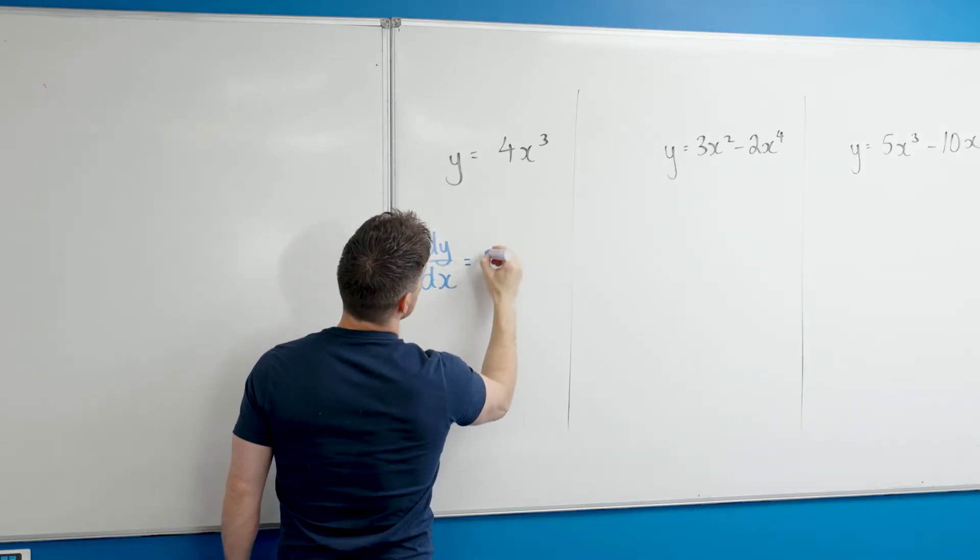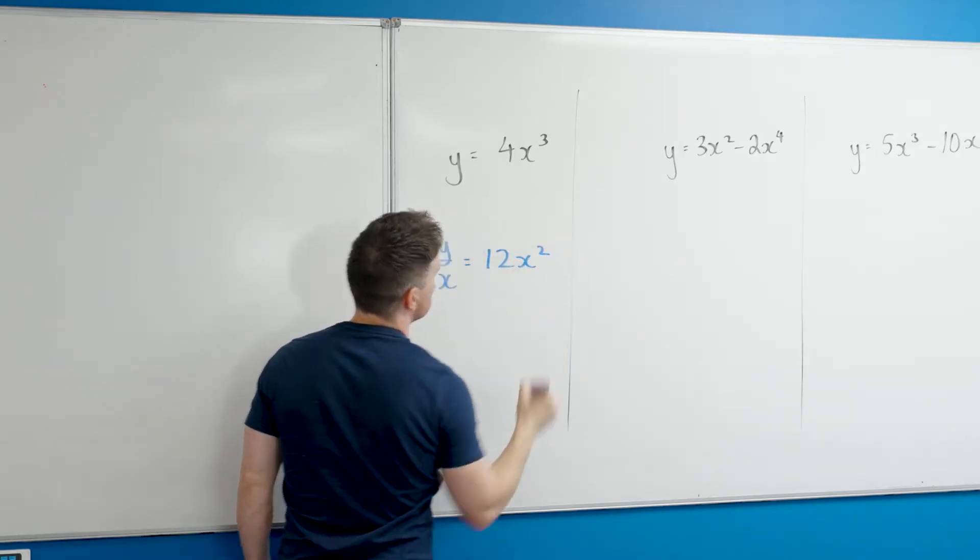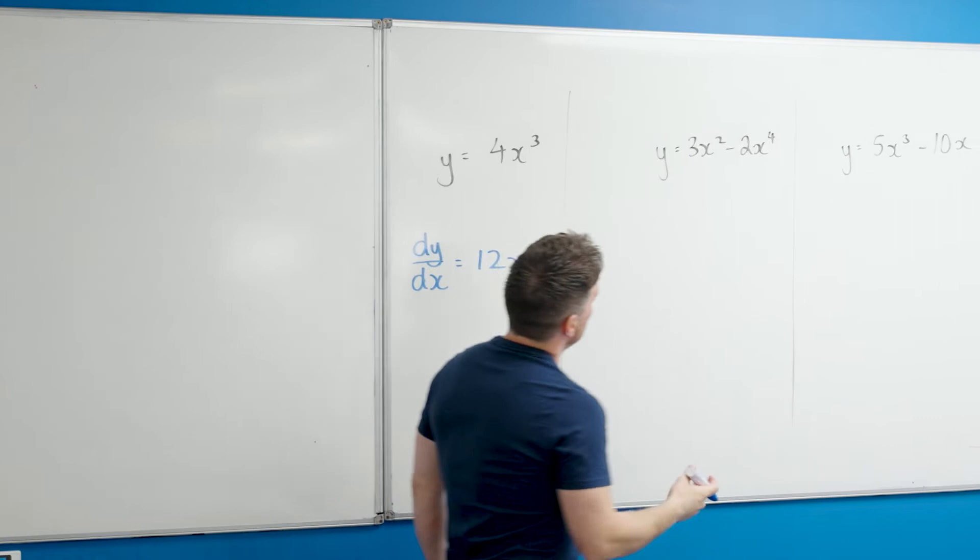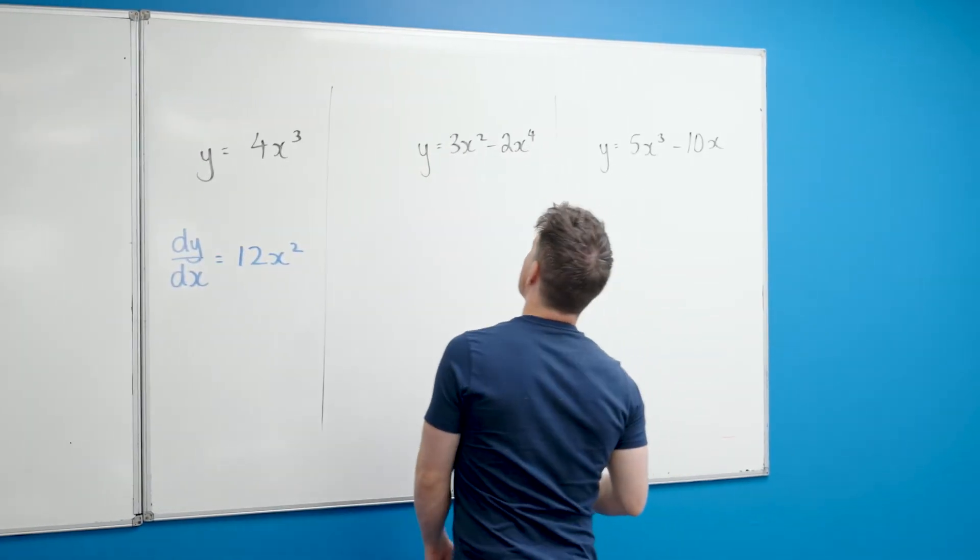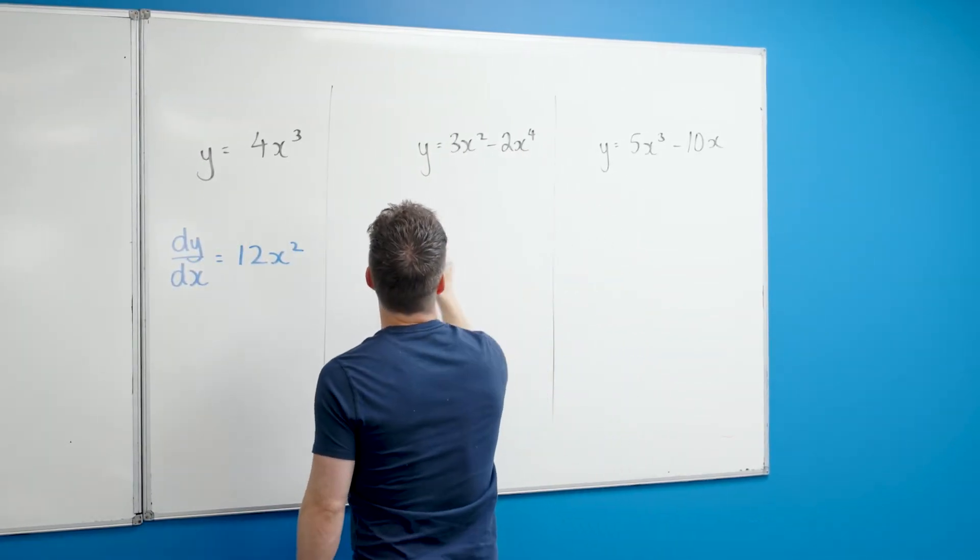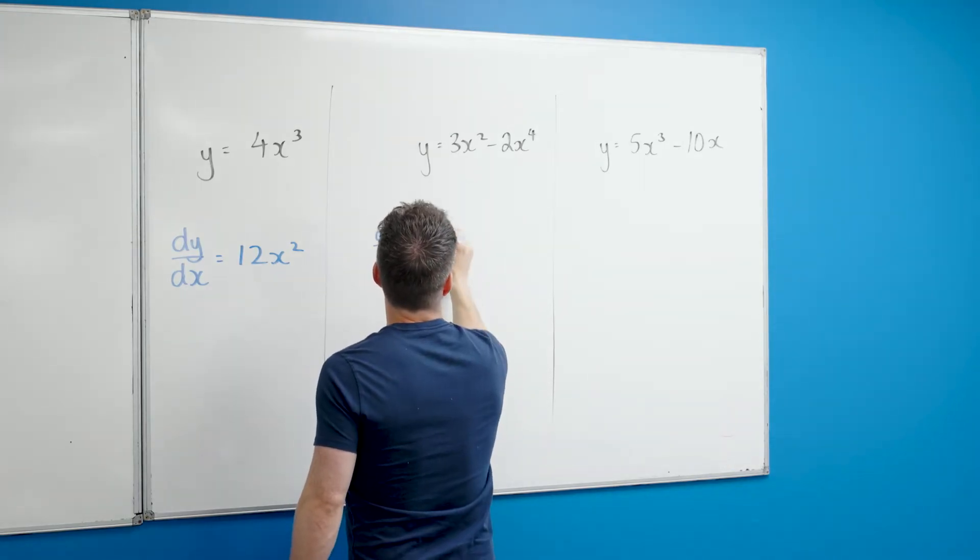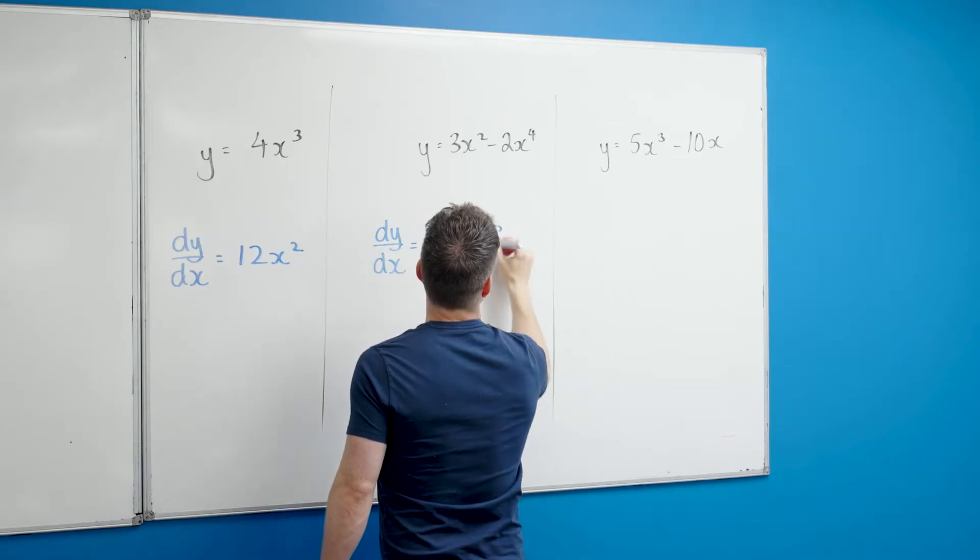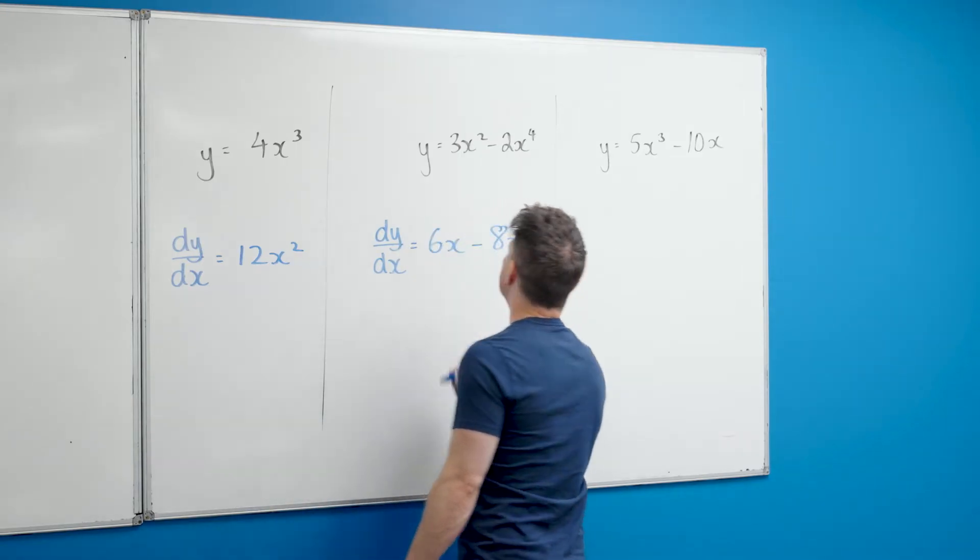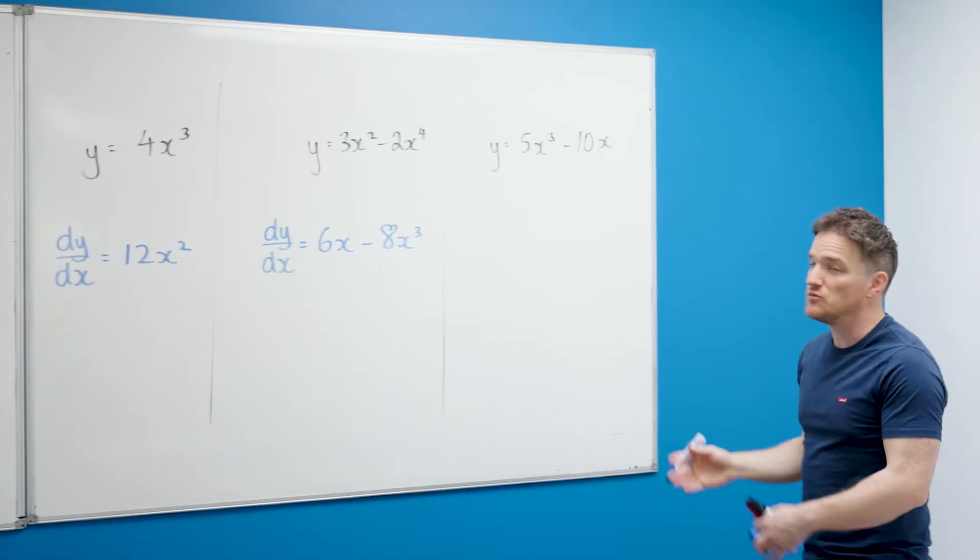Over here, here's the question: y equals 3x squared minus 2x to the power 4, and I'm going to say dy/dx equals 6x minus 8x cubed.